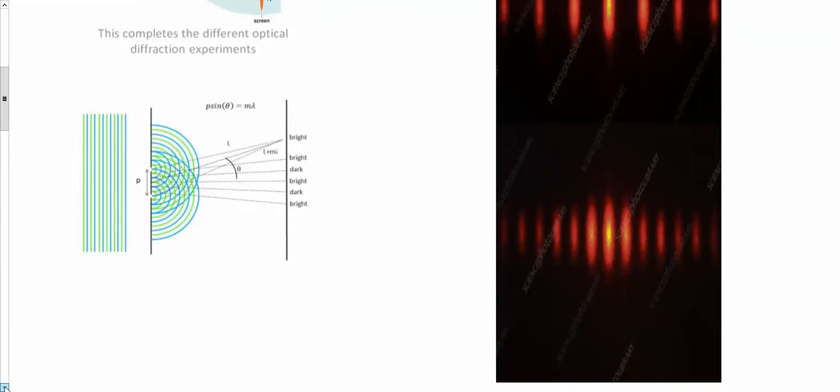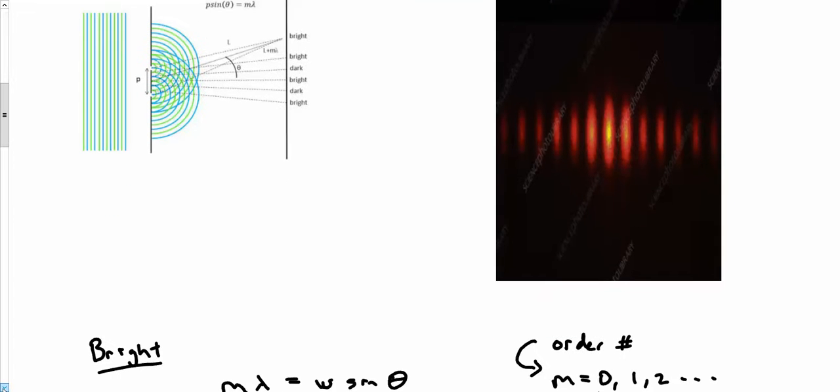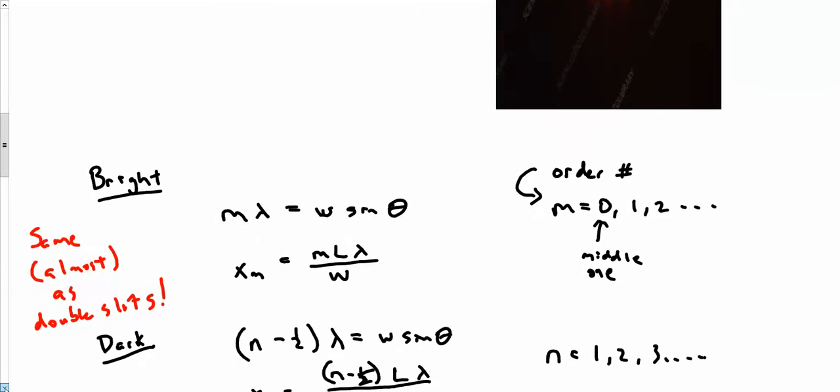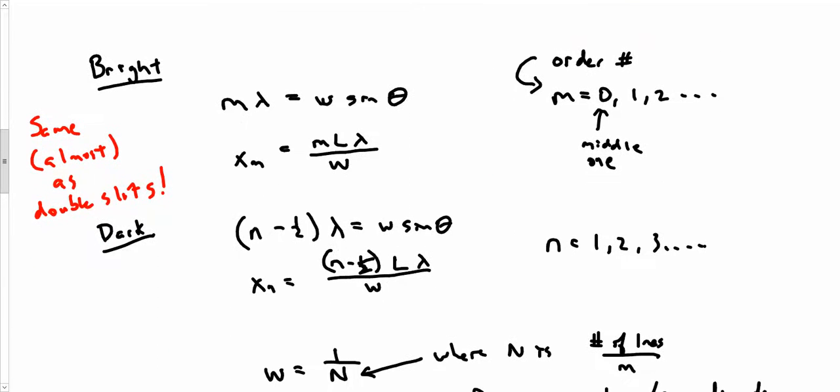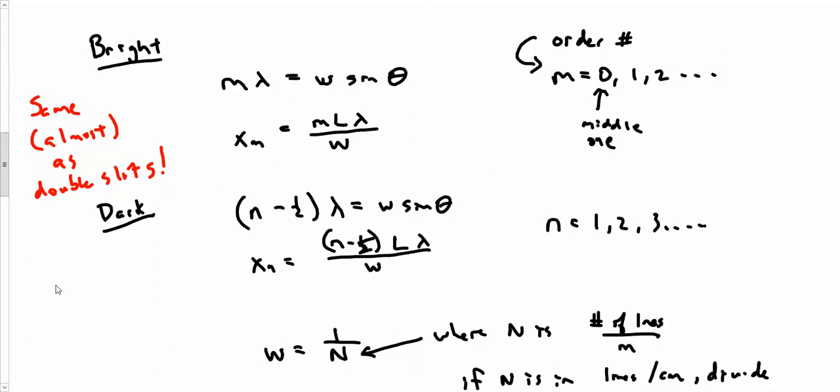Now there's proofs for this, you can find them online, you can find them in the textbook, I don't really care. The net result is we're getting a set of equations just like we did before. Actually, almost the same as we had for double slits. Double slits was m lambda equals d sine theta for double slits, the d being the distance between the slits. Here, we're replacing d with a w, where w is the distance between slits.